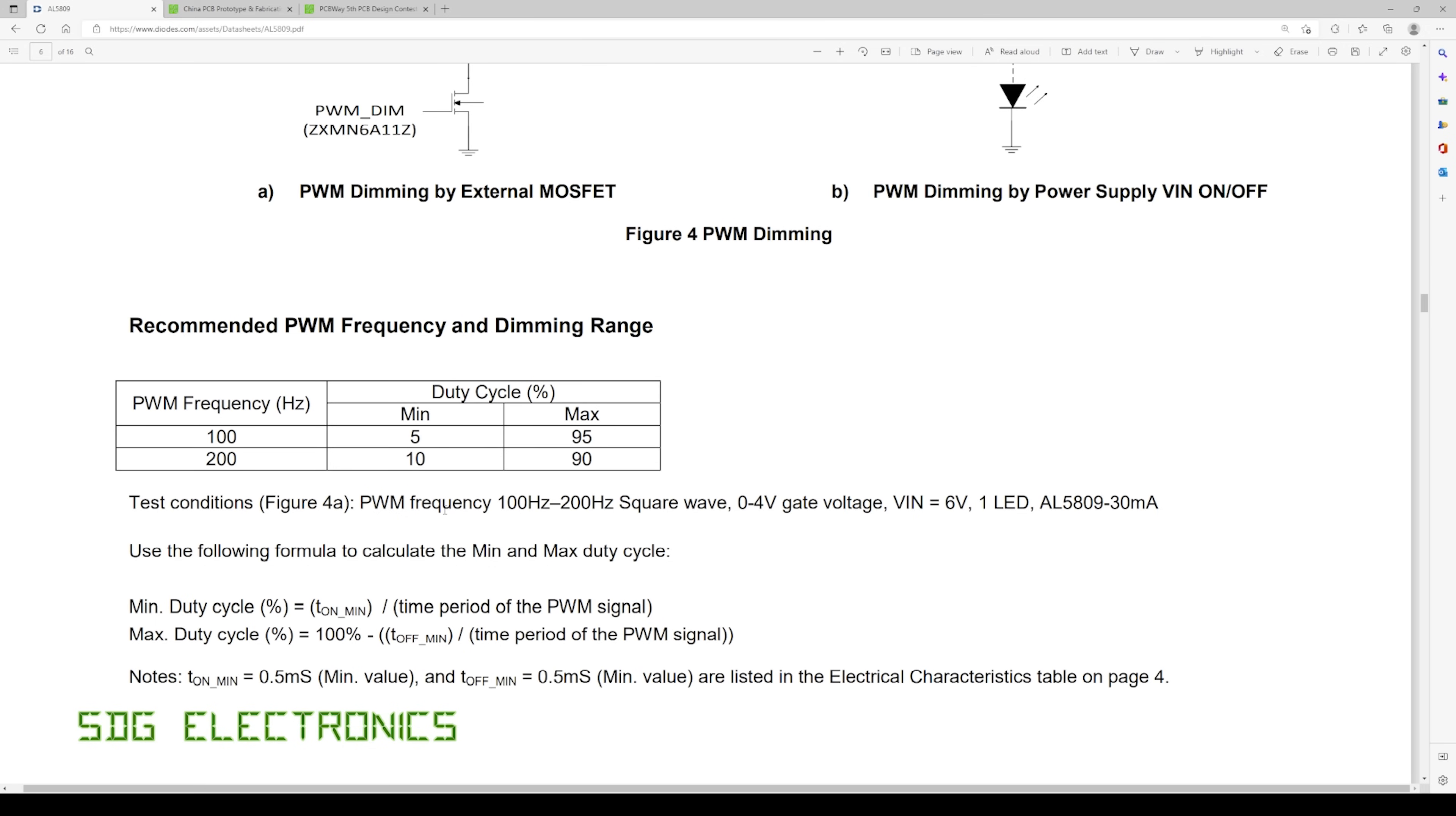I would like to be able to dim it quite smoothly right down to zero percent and they're recommending here an on time of at least 0.5 milliseconds which is the reason how they've got to those figures